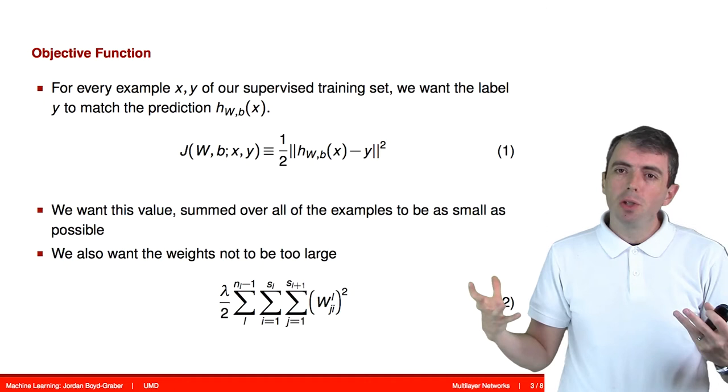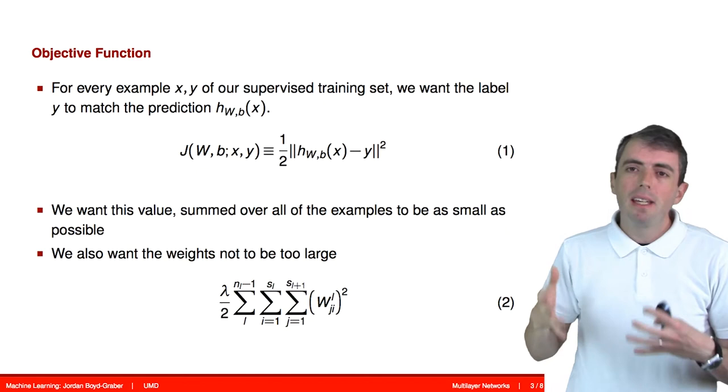If the weights get too large, this can lead to odd degenerate solutions to our problem. So if we keep the weights small, this will often lead us to a better solution more quickly.